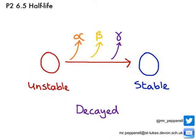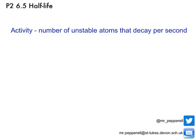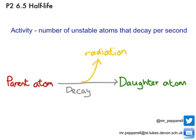Our unstable nucleus has decayed into a stable nucleus. The activity of a radioisotope is actually a measure of the number of unstable atoms that decay every second. The more atoms that decay, the higher the activity. As the nucleus of an unstable atom — we call this the parent atom — decays, the number of parent atoms in the lump of material will have gone down.